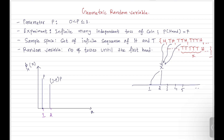The random variable can also take the value 3. The probability that X equals 3 means we did not get success on the first two trials and on the third trial we got success. We can observe the nature of this PMF from these patterns.